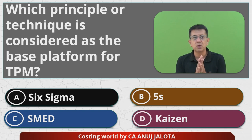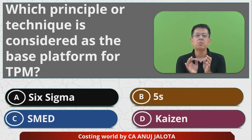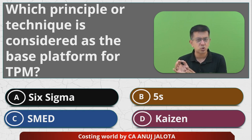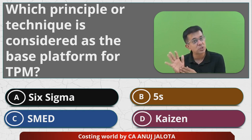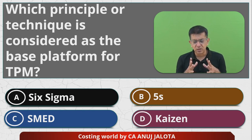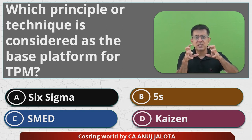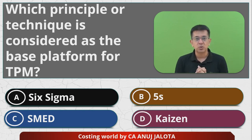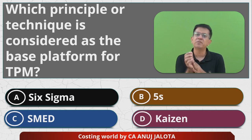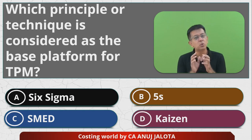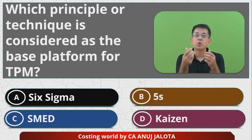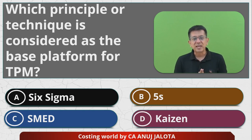Kaizen Costing means small improvements over a period of time make a big difference. Now, TPM — Total Productive Maintenance — is about maintaining your machines so there are no unscheduled stops, keeping the workplace clean, cleaning machines regularly, and keeping an inventory of parts that get spoiled. All these things are basically taken from 5S, which is about how to organize your entire workplace.